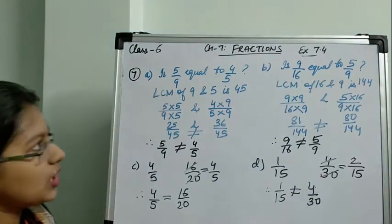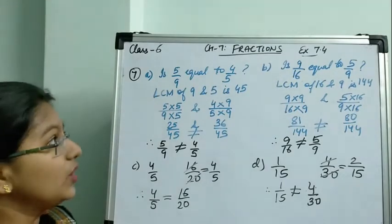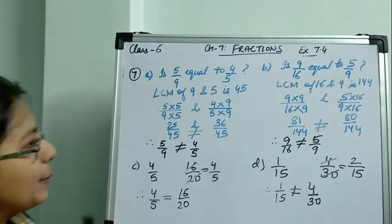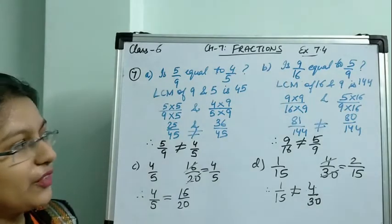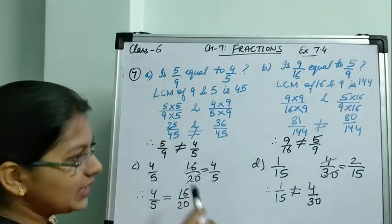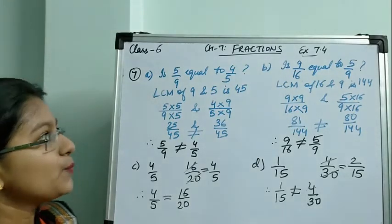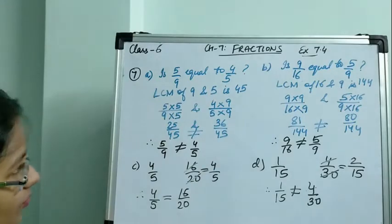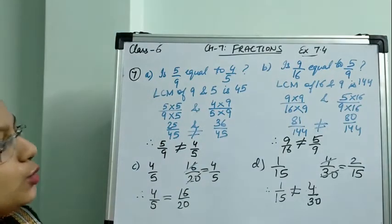If the question asks us to check whether two fractions are equal or not, it means we have to compare the fractions. For comparing any fraction, first check whether they can be simplified. If they can be simplified, do that. If they cannot be simplified, take the LCM. This is the basic method for comparing any two fractions.